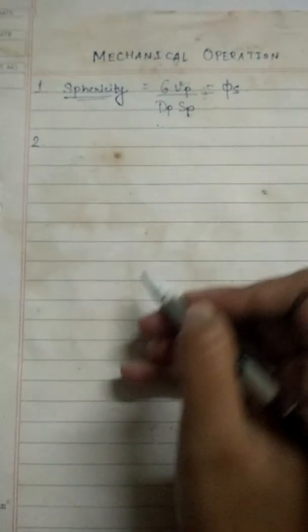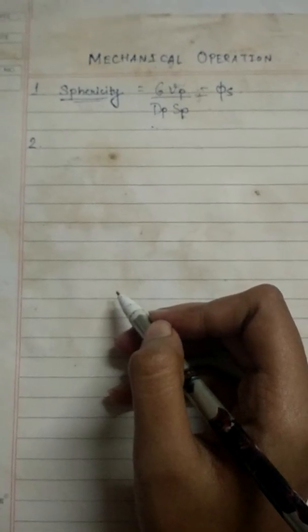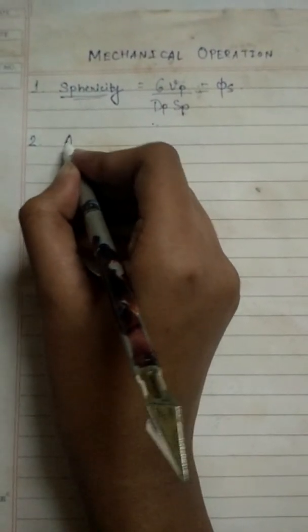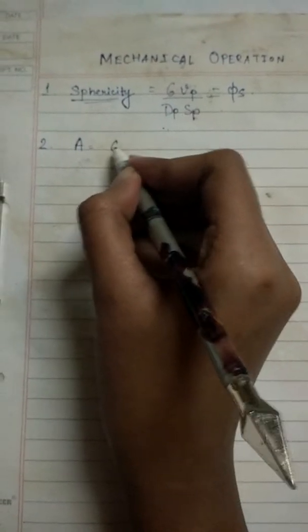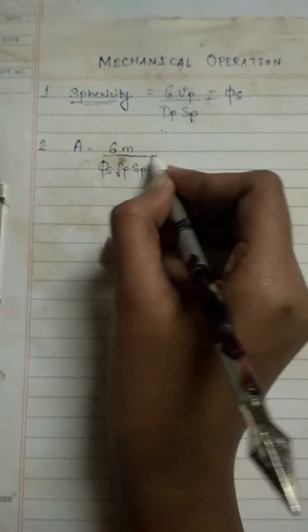The next thing that you come across is the total surface area taken by the particle. If it's denoted by A, it's given by 6 m by phi s rho p sp. So 6 m by phi s rho p into sp, where rho p is for my density and m is for the mass of the particle that I have at hand. So this will give you the total surface area.